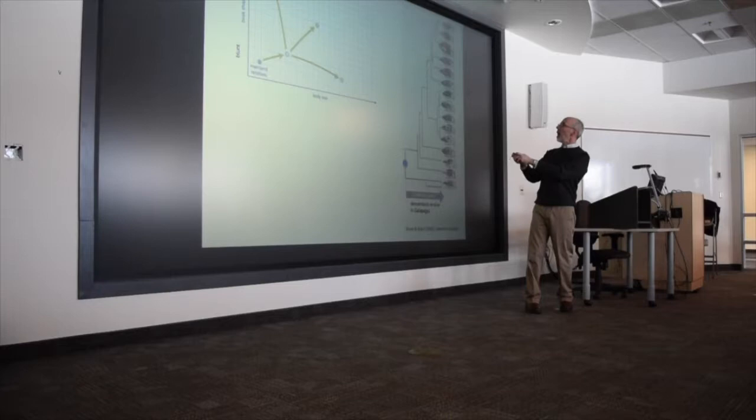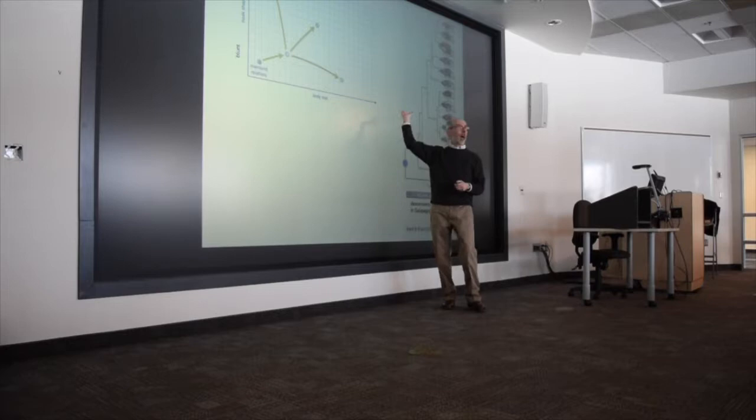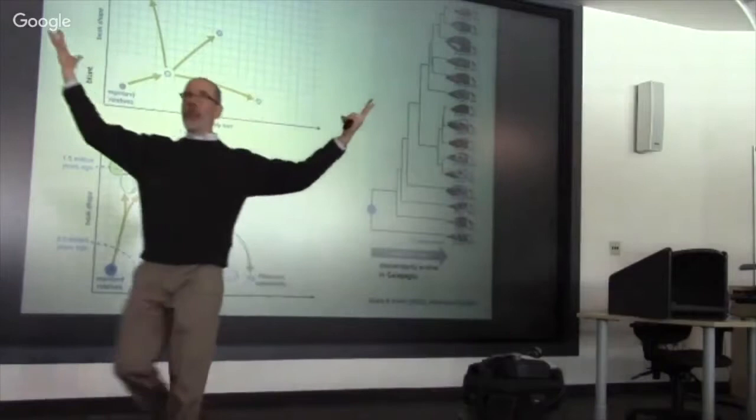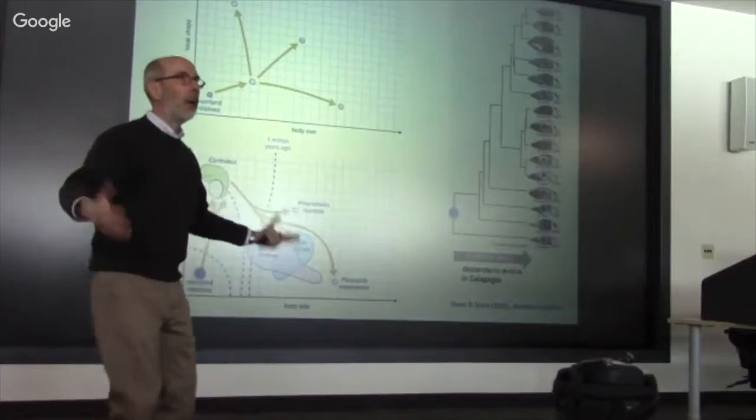So what Grant and Grant did is they said, let's take a look at the relationship between beak shape, so sharp beaks up here, blunt beaks here, and body size. These are two very important features of these birds on the Galapagos. Let's imagine a thing called adaptive radiation. Here is the mainland relative right here. What we see is that the species occupy a whole bunch of the morphospace, or if you're a computer scientist, you might think about it as a search space.